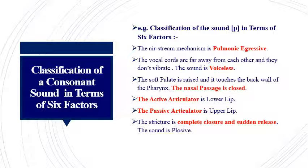Stricture is the term used for the relationship between the active articulator and the passive articulator during the articulation of a particular sound. When we articulate /p/, both articulators — the lower lip and the upper lip — form a complete closure, and then suddenly there is a release of air. The relationship is that of complete closure and sudden release. As a result, when there is a sudden release of air the sound is produced with a burst, so it's a plosive sound. Sounds pronounced with complete closure and sudden release are called plosives.